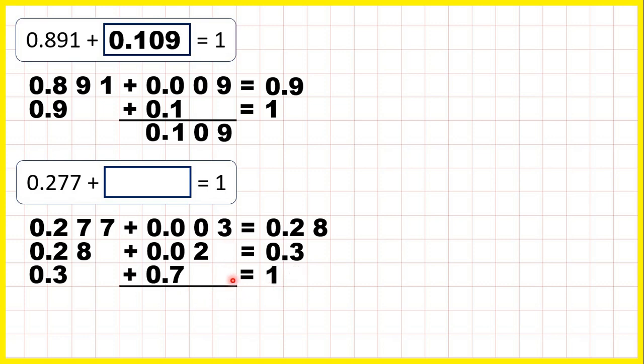So, all together, we added 3 thousandths, then 2 hundredths, then 7 tenths, so our missing number bond is 0.723.